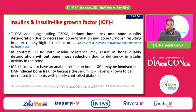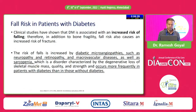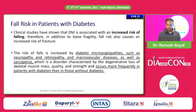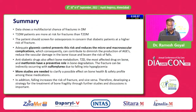The last part of the talk covers fall risk in patients with diabetes. Fall risk is increased by diabetic microangiopathy such as neuropathy and retinopathy, macro- and microvascular disease, and sarcopenia — a disorder characterized by degenerative loss of skeletal muscle mass, quality, and strength — which occurs more frequently in patients with diabetes.